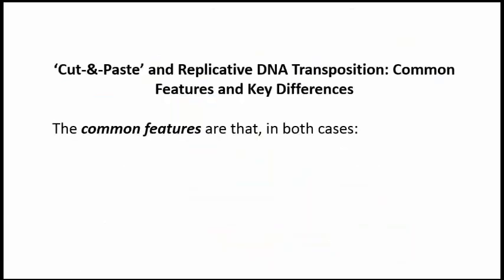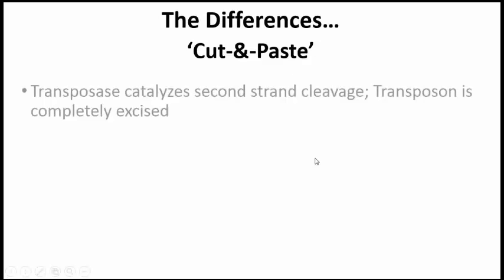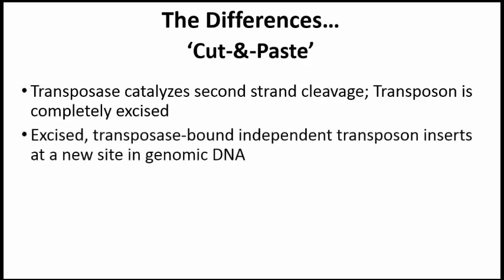Let's summarize the similarities and differences between cut-and-paste and replicative transposition. The common features are at the start of the transposition pathway: transposase catalyzes single-stranded hydrolysis and trim-back to leave staggered overlapping ends. In cut-and-paste transposition, transposase catalyzes second-strand cleavage to release the transposon from its resident DNA. The enzyme keeps the transposon ends together, effectively creating a circular structure, then catalyzes cleavage of the target site DNA to begin insertion. The main distinction is that no cointegrate forms.